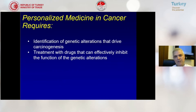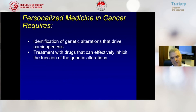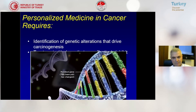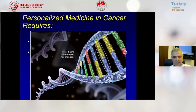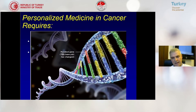Personalized medicine in cancer requires identification of genetic alterations that drive carcinogenesis and treatment with drugs that can effectively inhibit the function of genetic alterations. For example, a mutated gene has changed the DNA translation or RNA translation of the gene so that a driving mutation can cause a cancer.